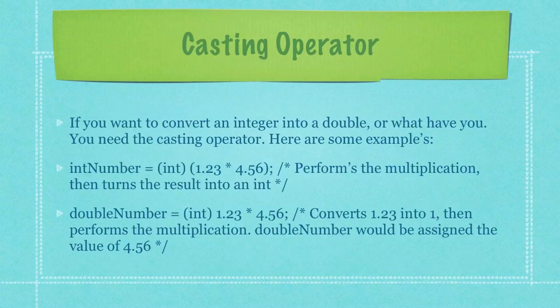If you want to convert an integer into a double or any other type of casting you need to use the casting operator and here are some examples. In the second bulleted item here I'm performing a multiplication and then turning the result of that multiplication into an integer.